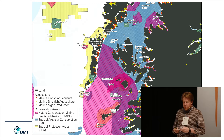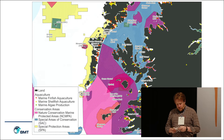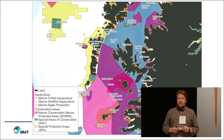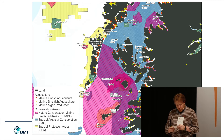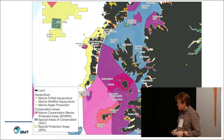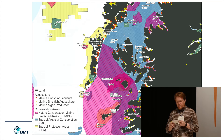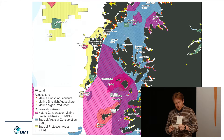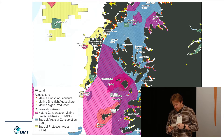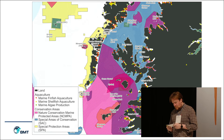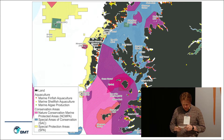The National Marine Plan for Scotland has a set of objectives. The number one objective for aquaculture is to develop an aquaculture industry that is sustainable, diverse, competitive, economically viable and contributes to food security, whilst minimising environmental impact.